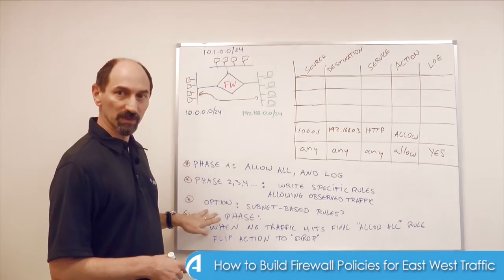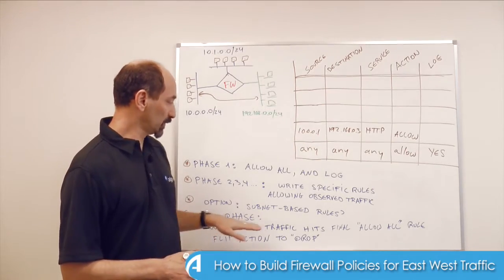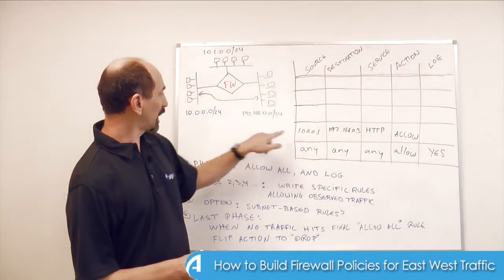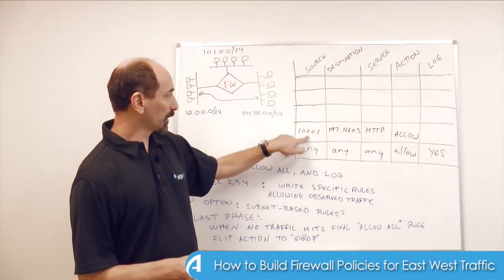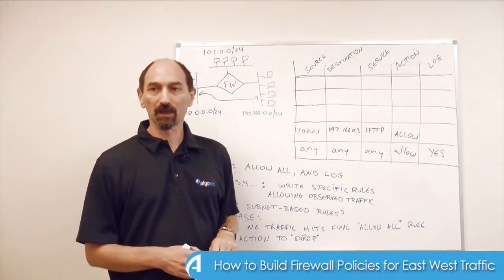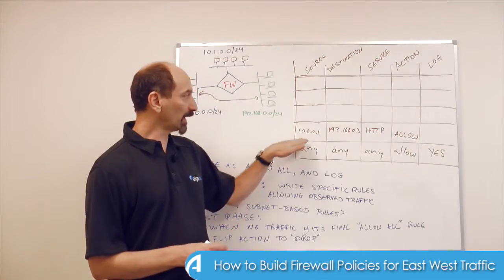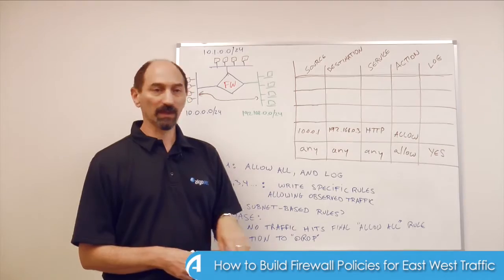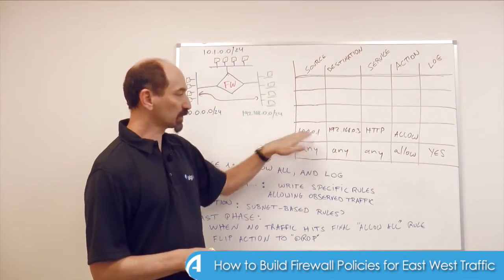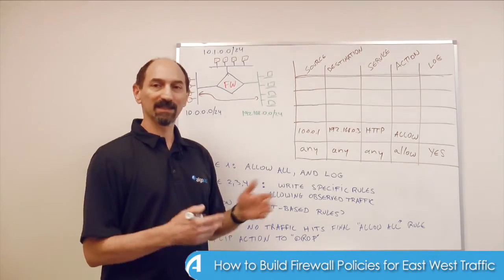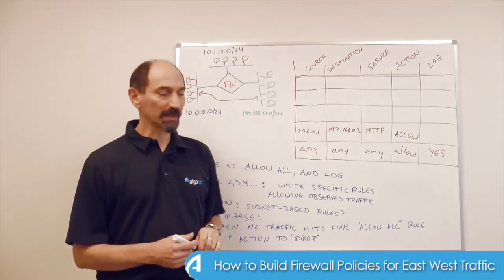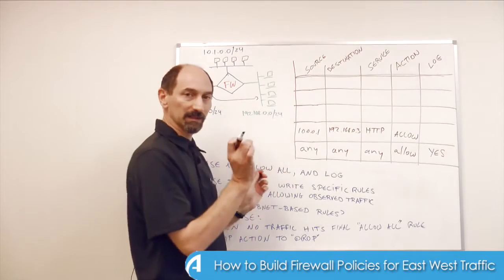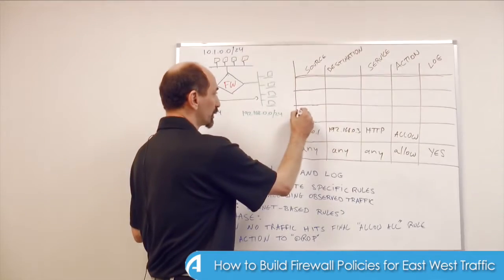An option to consider is using subnet-based rules. Perhaps you saw traffic from one particular IP address to another particular IP address and wrote a rule just for that traffic. But perhaps you know that server has siblings at similar IP addresses, so instead of writing a very narrow rule, you could extend it slightly and future-proof it.